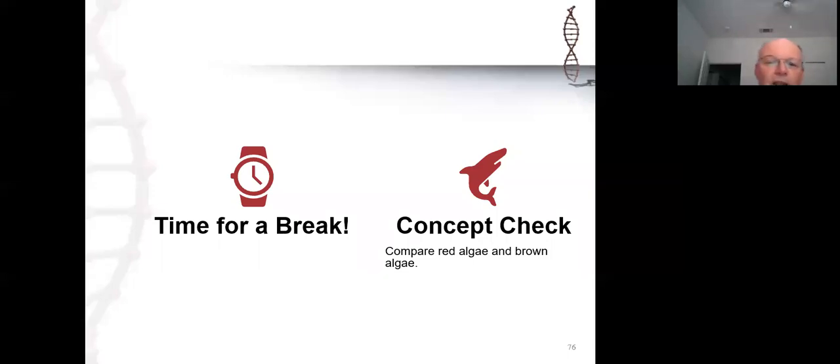Welcome back from the break. Let's take a look at this question very quickly: compare red algae and brown algae. What do red algae have that brown algae don't have? What do they both have in common? Both are algae, both have chloroplasts derived from the endosymbiosis of cyanobacterium. The one thing they do have in common is chlorophyll a and chlorophyll b as the primary photosynthetic pigments.